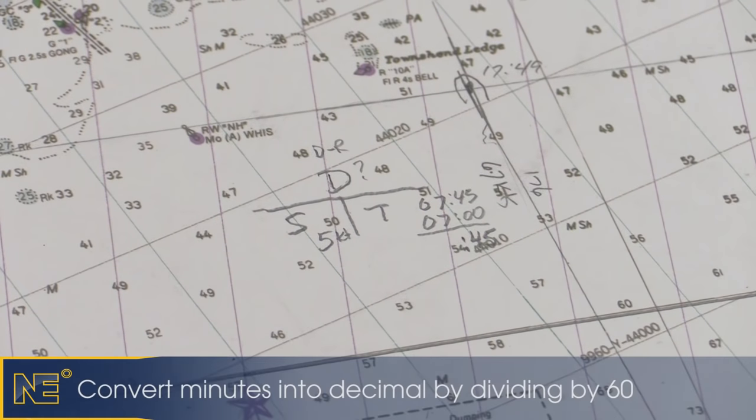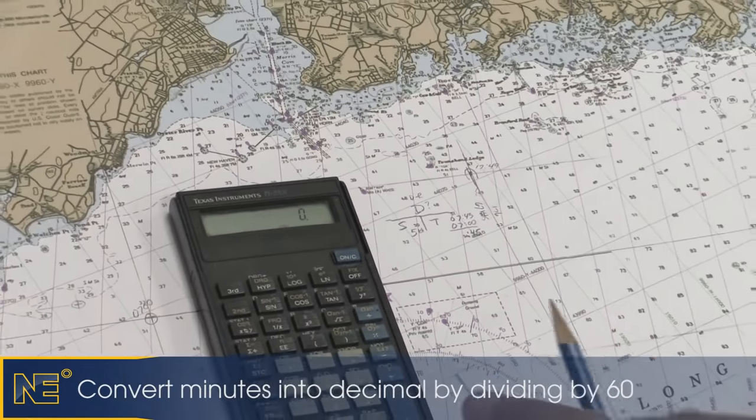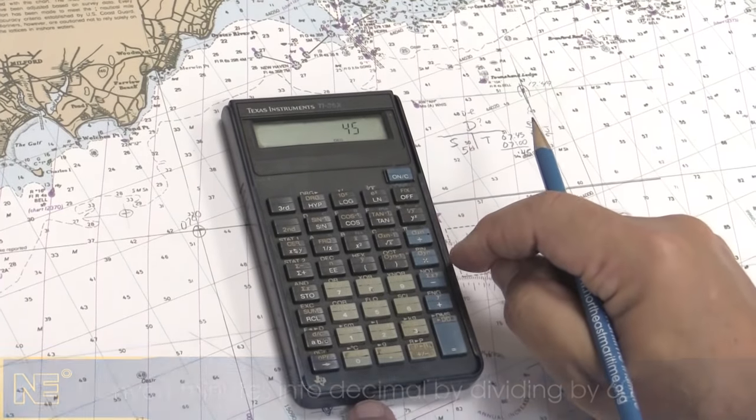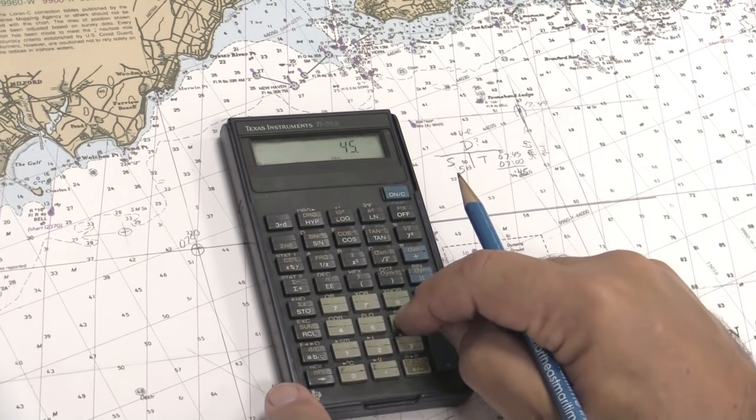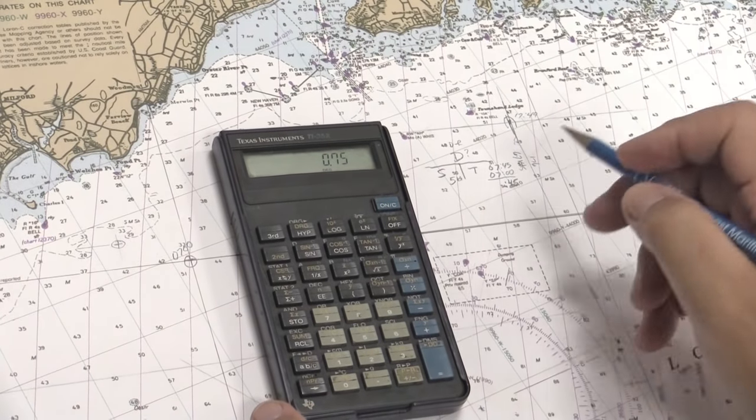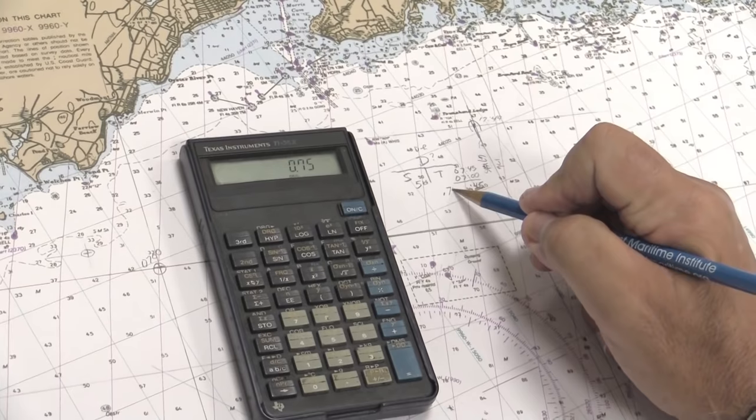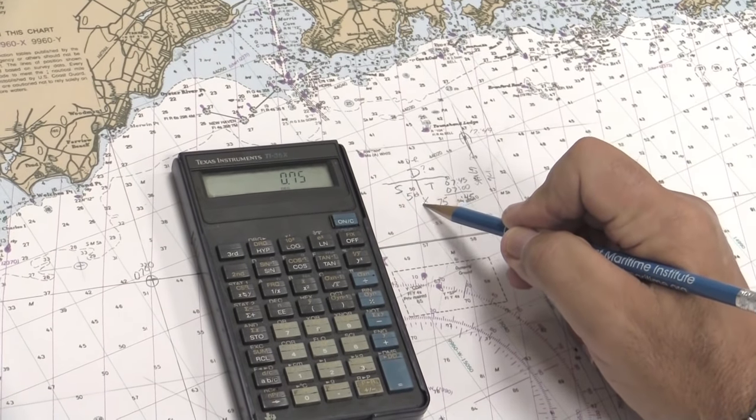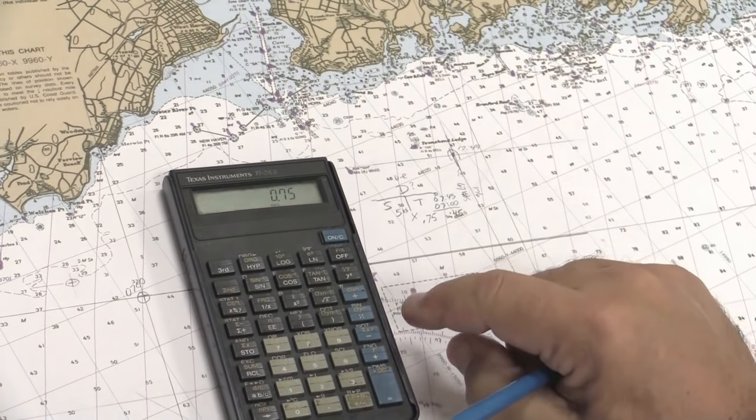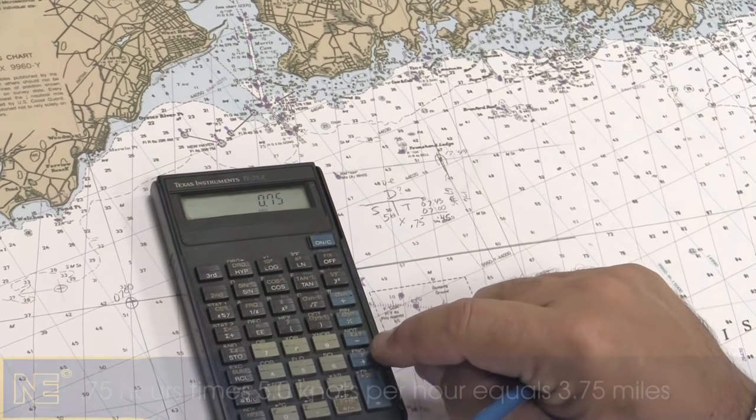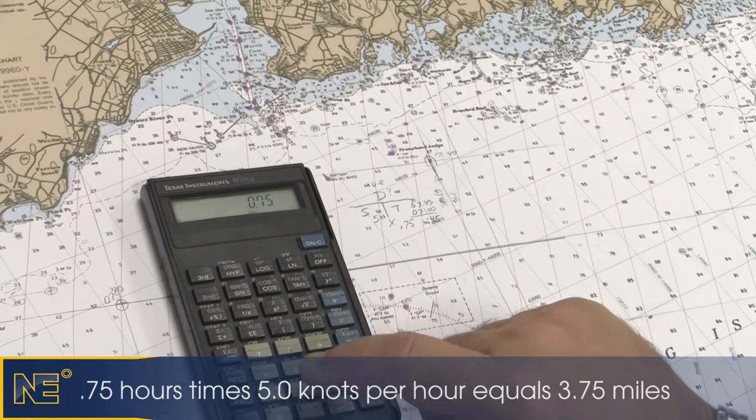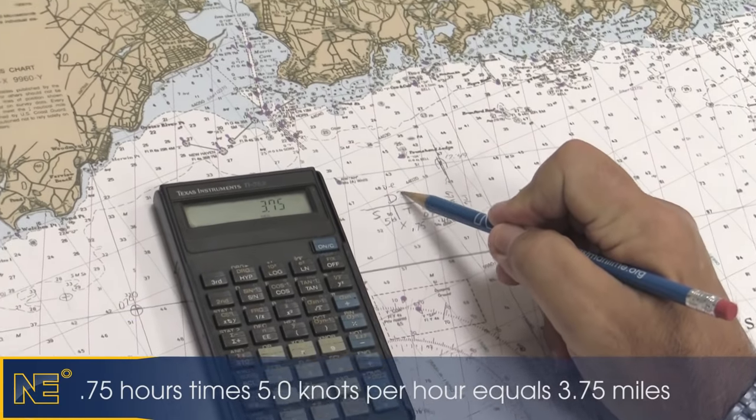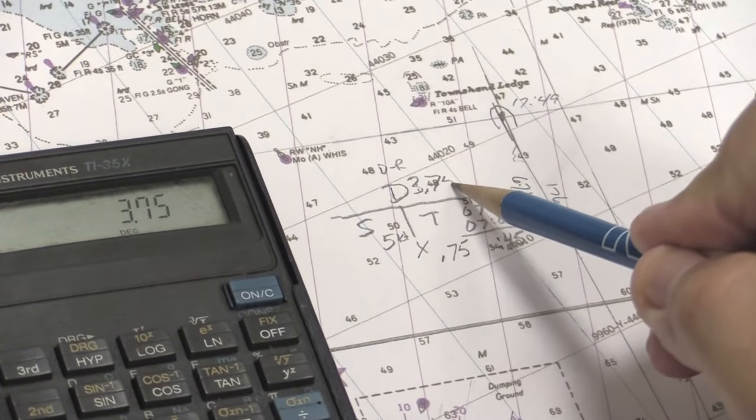We need to convert that 45 minutes to a decimal by dividing by 60. So we take 45 divided by 60 minutes to an hour equals 0.75. We're going to take that now. Speed times time equals distance: 5 times 0.75 equals 3.75. That's our distance traveled over 45 minutes.